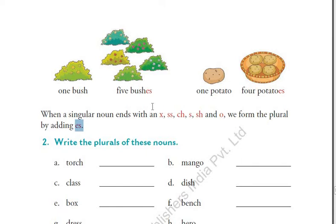I don't have any magic for this — you have to remember these six endings: X, double S, CH, S, SH, and O. You need to remember that if these six endings are there, you add 'ES' to form the plural of any word.